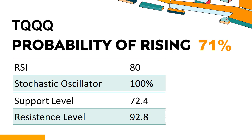TQQQ's short-term support level is 78.8. If it falls below 78.8 during the session, it will have a chance to test 72.4. TQQQ's short-term resistance level is 87.4. If it breaks through 87.4 during the session, it will look up to 92.8.